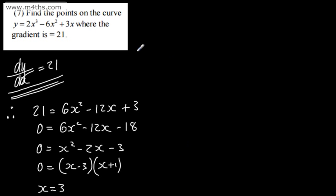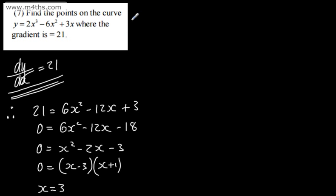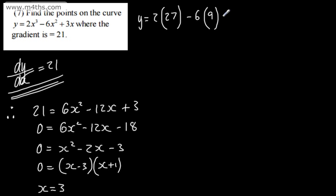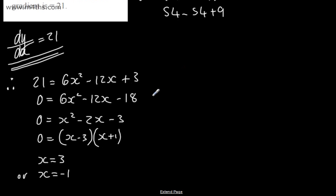It says the points, so I need to find the y-coordinate. Let's substitute in x equals 3: y is going to be 2 lots of 3 cubed, which is 27, minus 6 lots of 3 squared, which is 9, and then plus 3 lots of 3. So that gives 54 minus 54 plus 9. So x is equal to 3 and y is equal to 9, giving the point 3, 9.